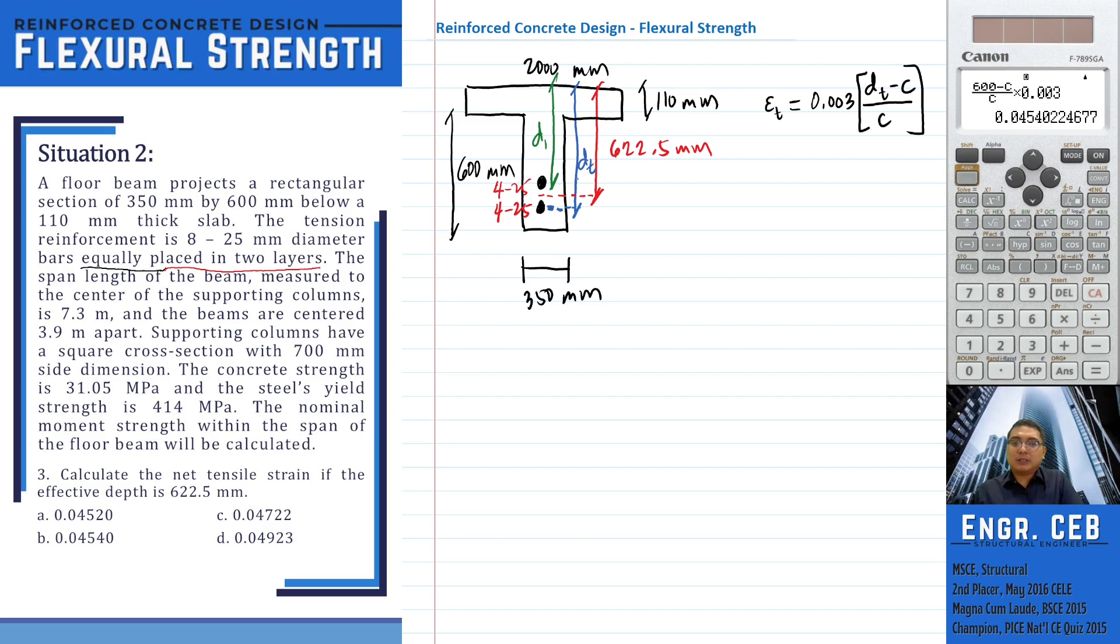So let us now solve for D sub T. Based on code, the vertical clear spacing between bars in two layers should not be less than 25 millimeters. So meaning, this clear distance should be 25 millimeters.